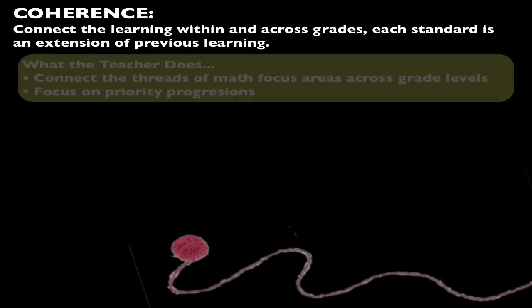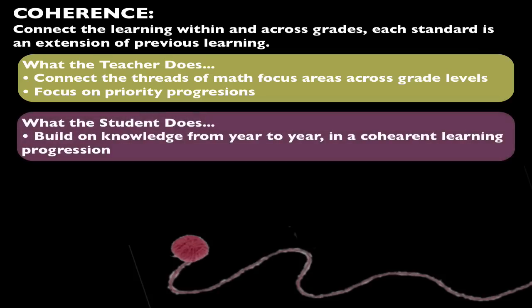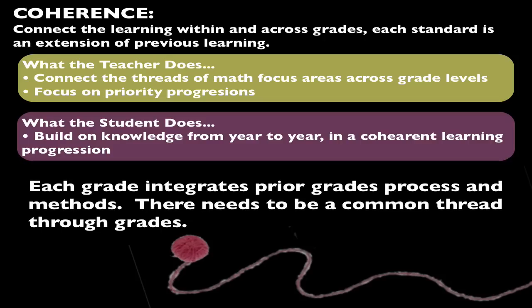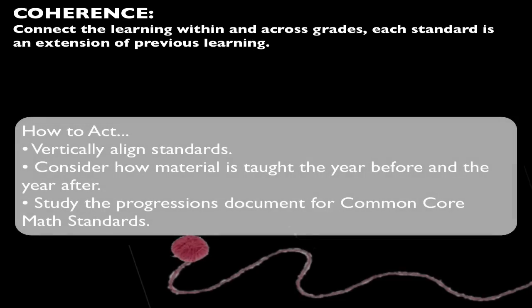Coherence is about making math make sense. Mathematics is not a list of disconnected tricks or mnemonics. This requires the connection of math focus across grade levels. Each grade integrates prior grades' processes and methods. There needs to be a common thread through grades. To act: vertically align your standards. Know the material that is taught the year before and the year after.